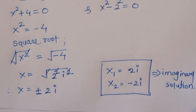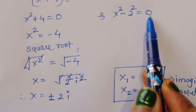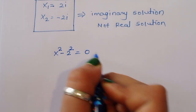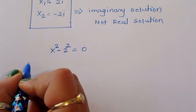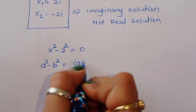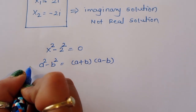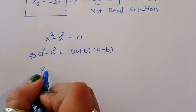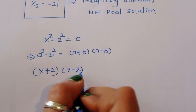Now taking the second equation: x² - 2² = 0. This is again in the form a² - b², so a² - b² = (a + b)(a - b). Therefore x² - 2² = (x + 2)(x - 2) = 0.